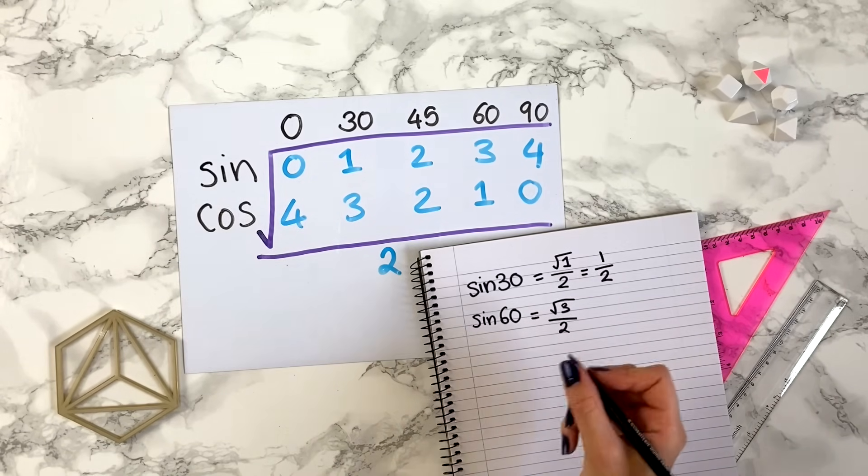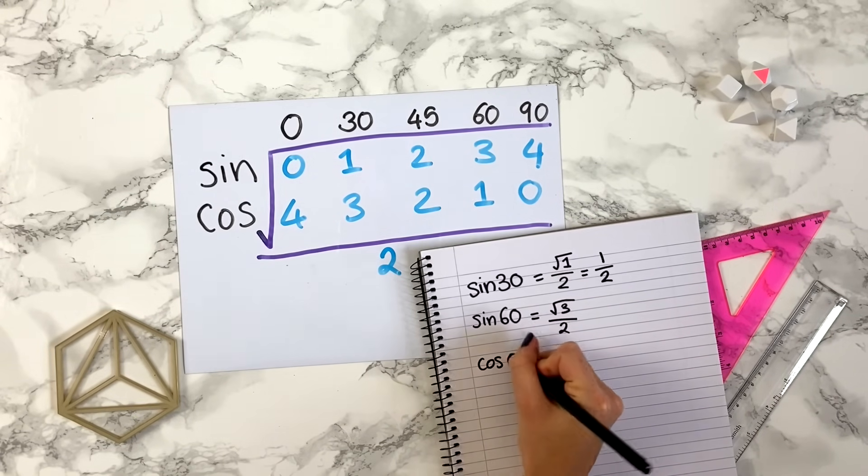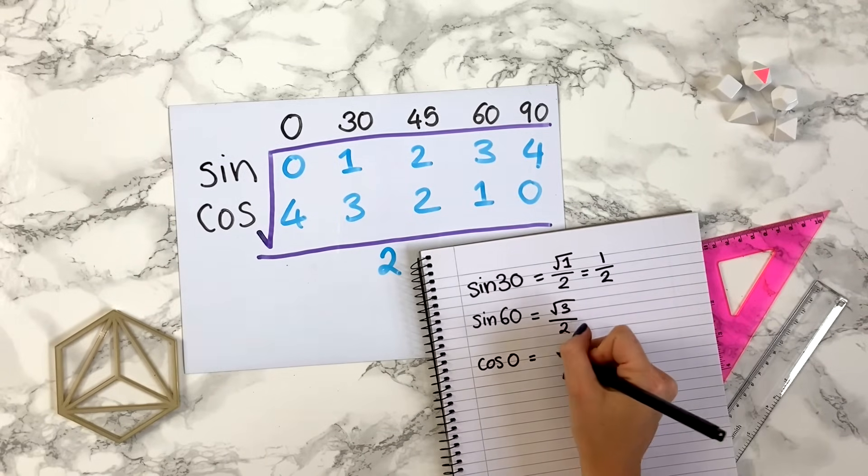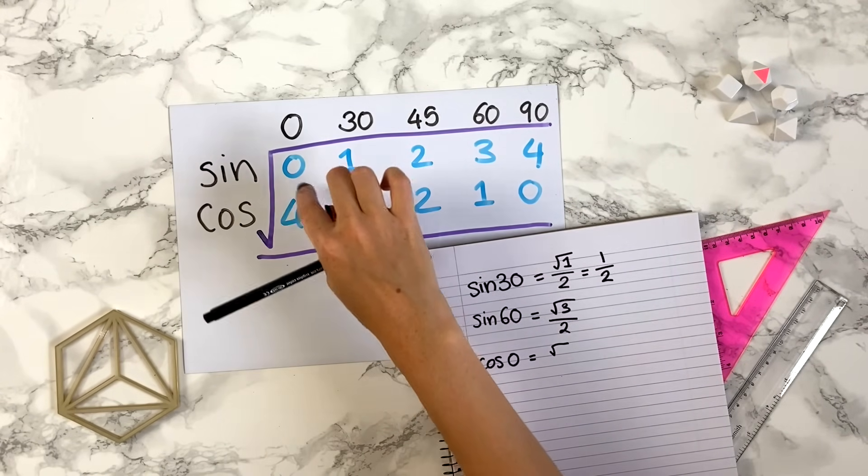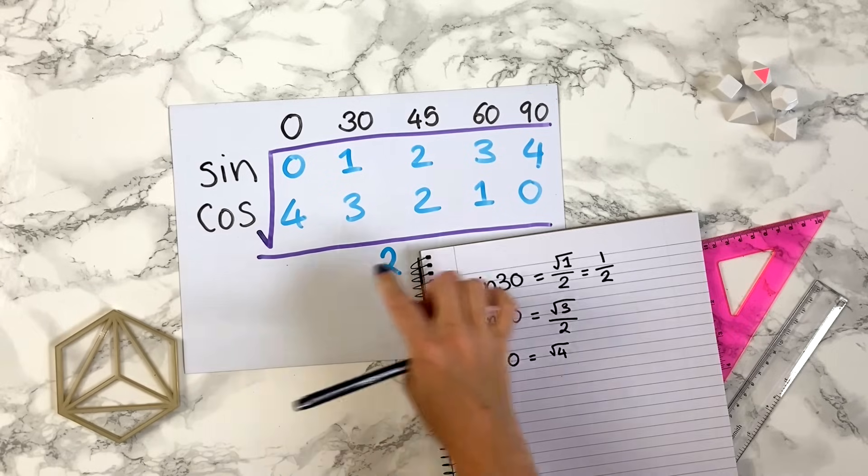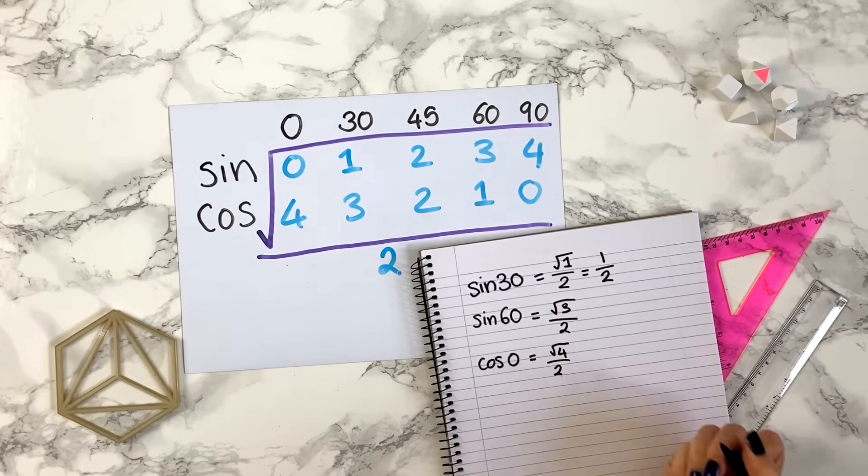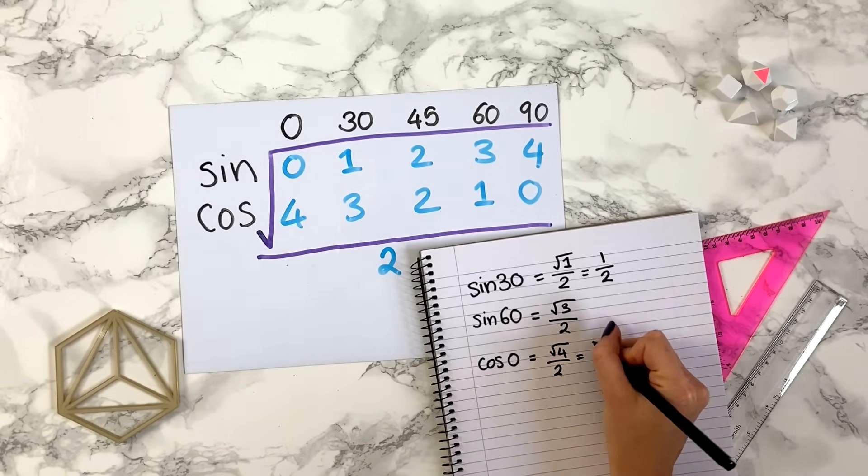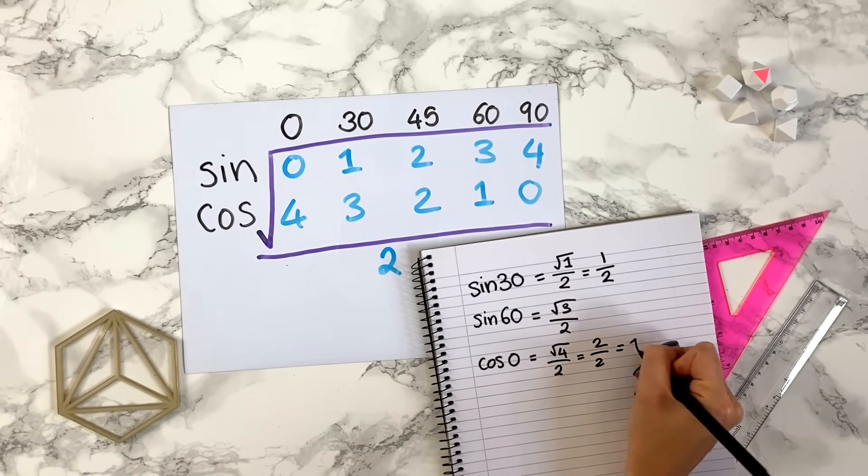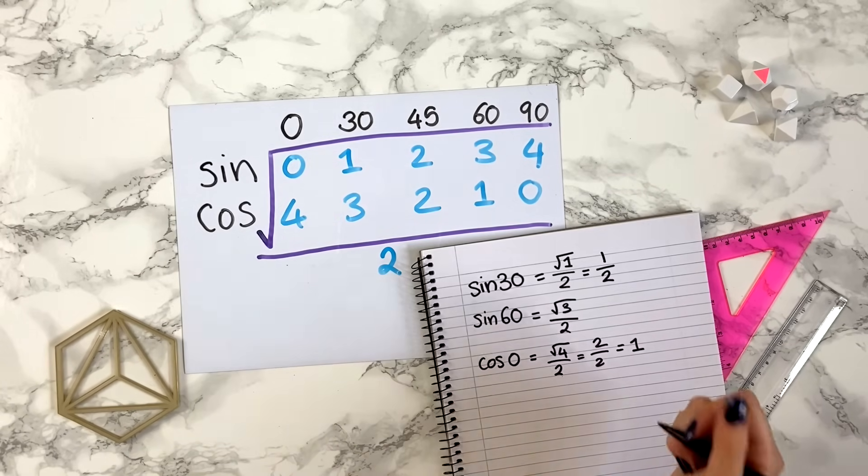Let's try cos of 0. So we take the square root sign. Here we get a 4, so we write 4 here, and then all divided by 2. Square root of 4 is 2, so we have 2 over 2, which is just 1. So cos of 0 is 1.